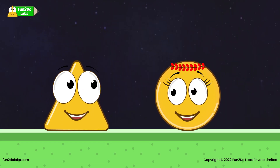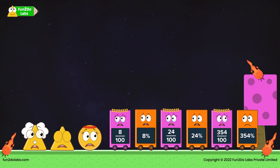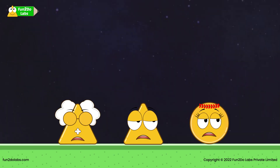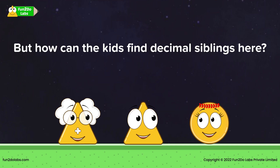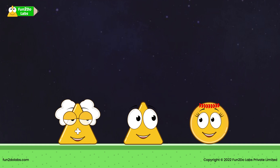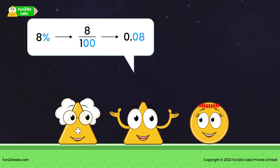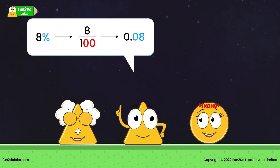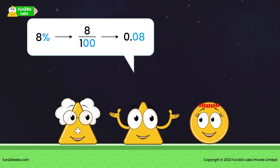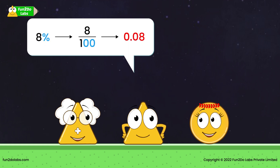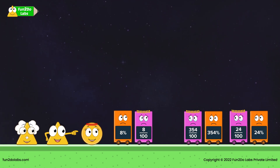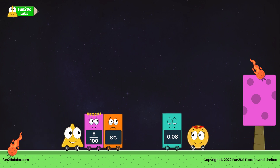Sirha and Triho are happy. But citizens still cannot find their decimal siblings. Fractions, decimals, and percentages are the best triplets after all. Triho figures it out: Eight percent is nothing but eight by hundred. It has two zeros in the denominator, meaning its decimal will have two digits after the decimal point. So eight by hundred becomes zero point zero eight. Finally, eight percent equals eight by hundred equals zero point zero eight. The citizens are happy.